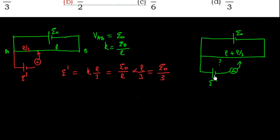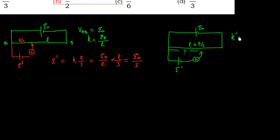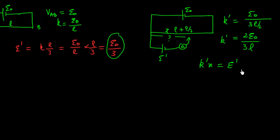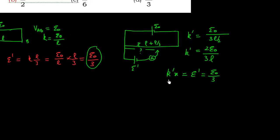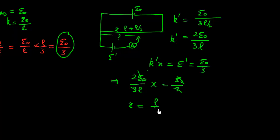If the length is increased by L by 2, the same cell gives null deflection at what distance? The new total length is 3L by 2. The new potential gradient K dash equals E₀ upon 3L by 2, that is 2E₀ upon 3L. Suppose the new balance length is X. Then K dash times X equals E dash, which is E₀ by 3. Substituting K dash, we get 2E₀ upon 3L times X equals E₀ by 3. Cancelling terms, X equals L by 2.